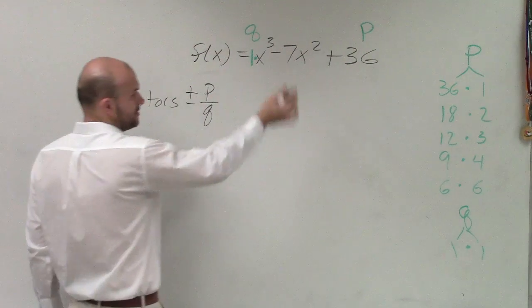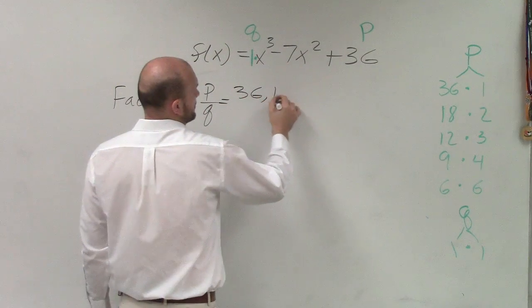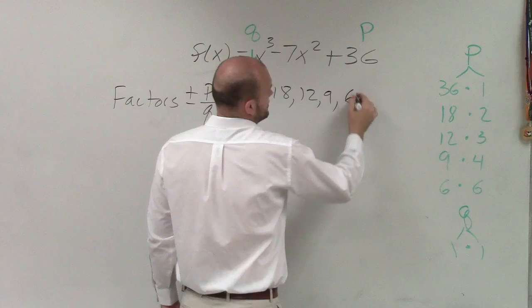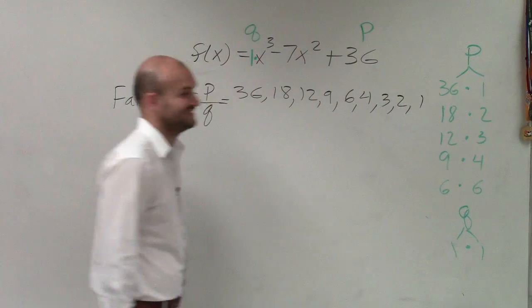Because what you do is you create the tree like I did, and you say p. All right. 36, 18, 12, 9, 6, 4, 3, 2, 1. Yeah, there's a lot of them, right?